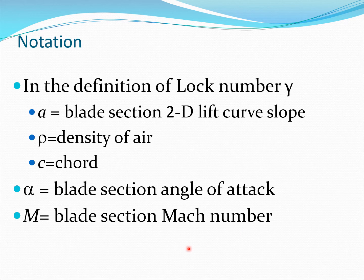In the definition of lock number, a is the blade section 2-D lift curve slope, rho is the density of air, c is the chord. This lift curve slope is a basic property of the airfoil section. If you have any airfoil section, you can plot the curve c_l with alpha and take the slope. That's a constant number provided for a typical airfoil section, maybe 5.73 or 2 pi for a perfect ideal section. Alpha is the blade section angle of attack. M is the blade section Mach number, which is velocity divided by speed of sound, speed of sound being 332 meters per second.